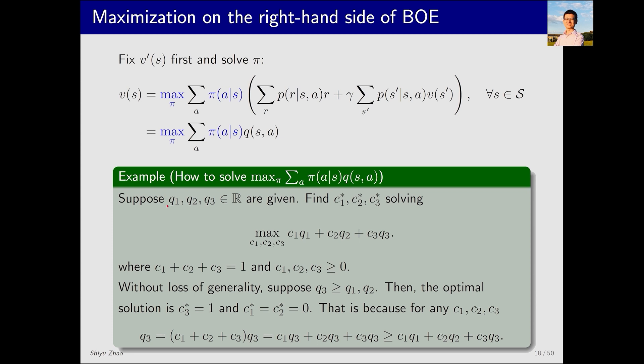Consider a simple case where we have 3 Q values. And our task is to find the coefficients that maximize an objective function, under the constraint that their sum equals 1 and each value is non-negative. This constraint is important because these coefficients correspond to probabilities, whose sum equals 1. What's the optimal value here? Let's assume there's a maximum among Q1, Q2 and Q3, for instance.